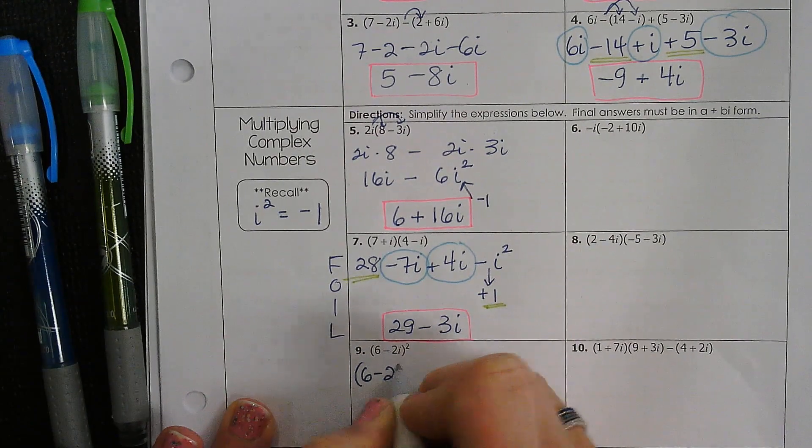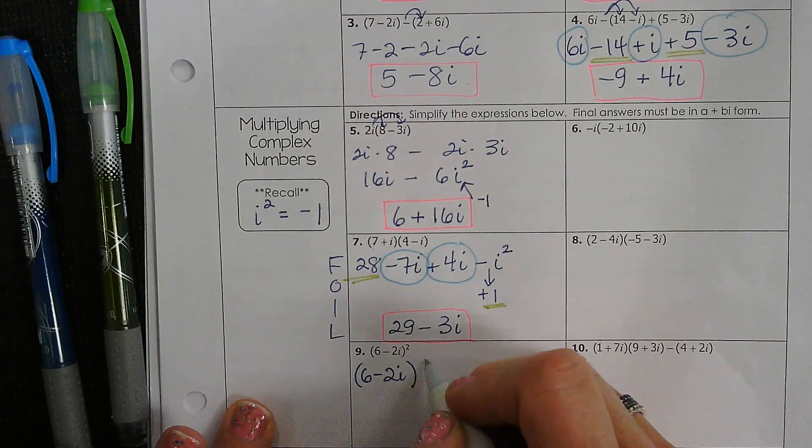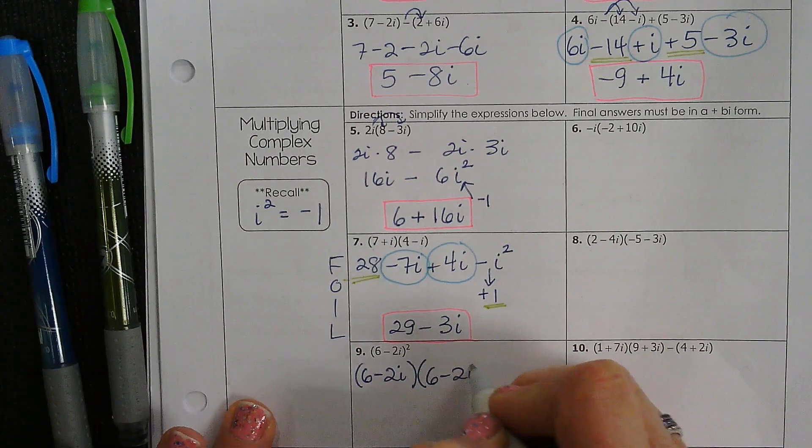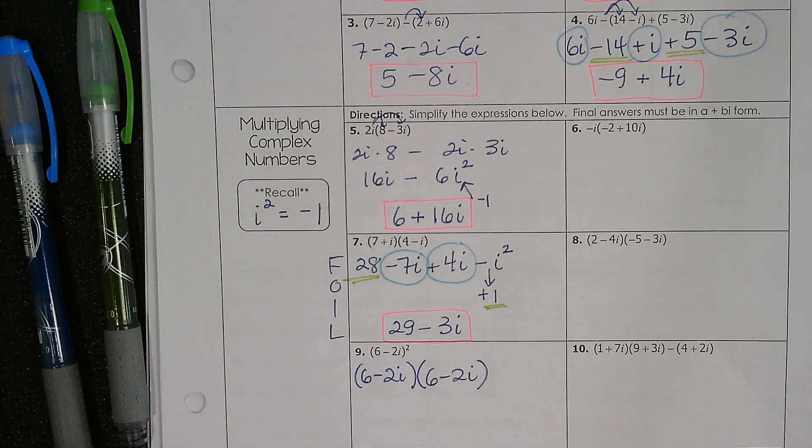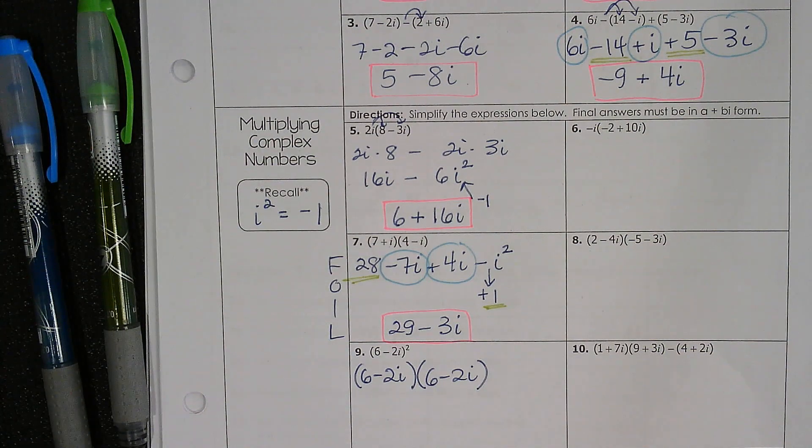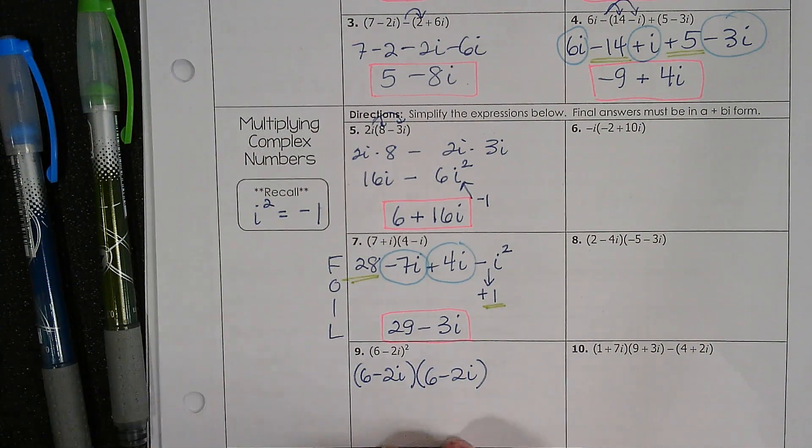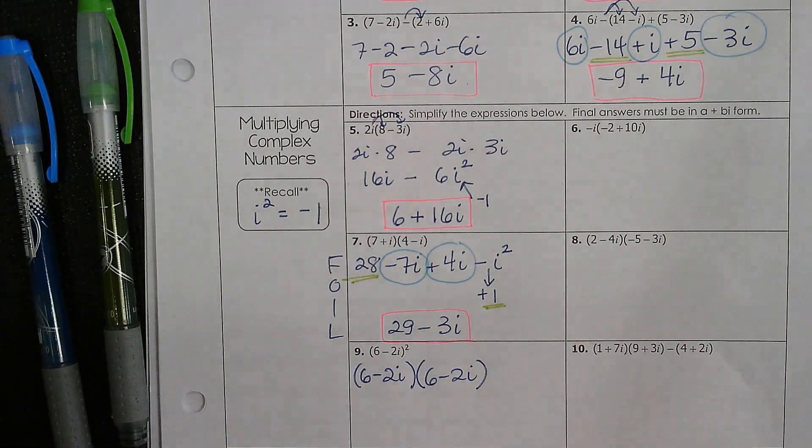Straight down. So this says 6 minus 2i squared. I'm going to write it out. It's just like... If you square a number, this is a complex number. So again, we're going to do FOIL.